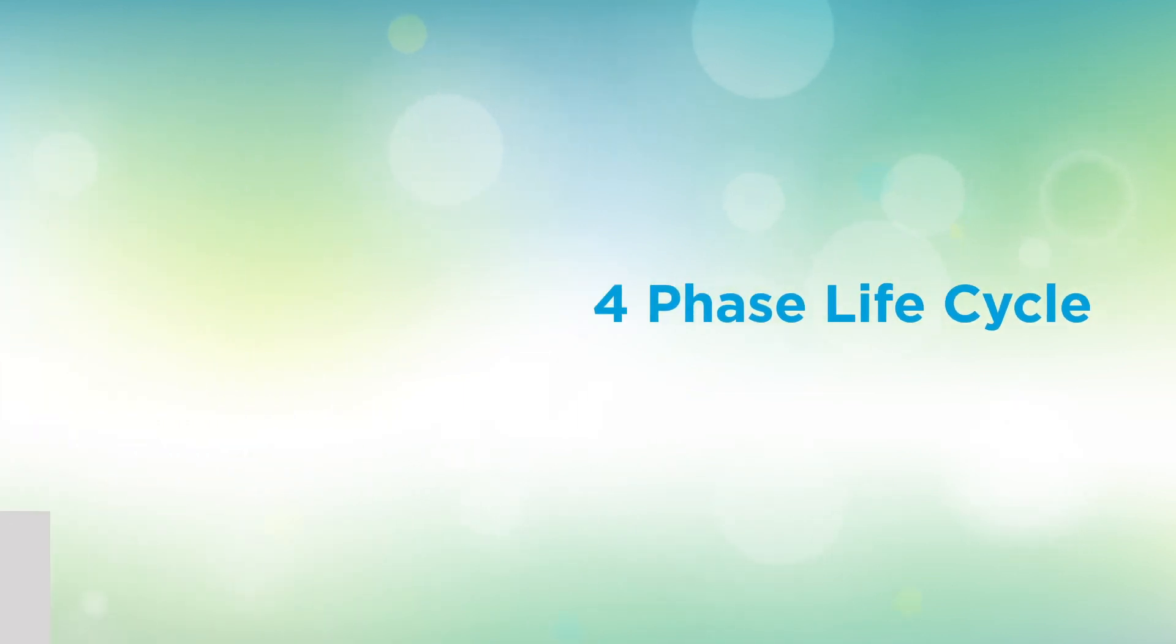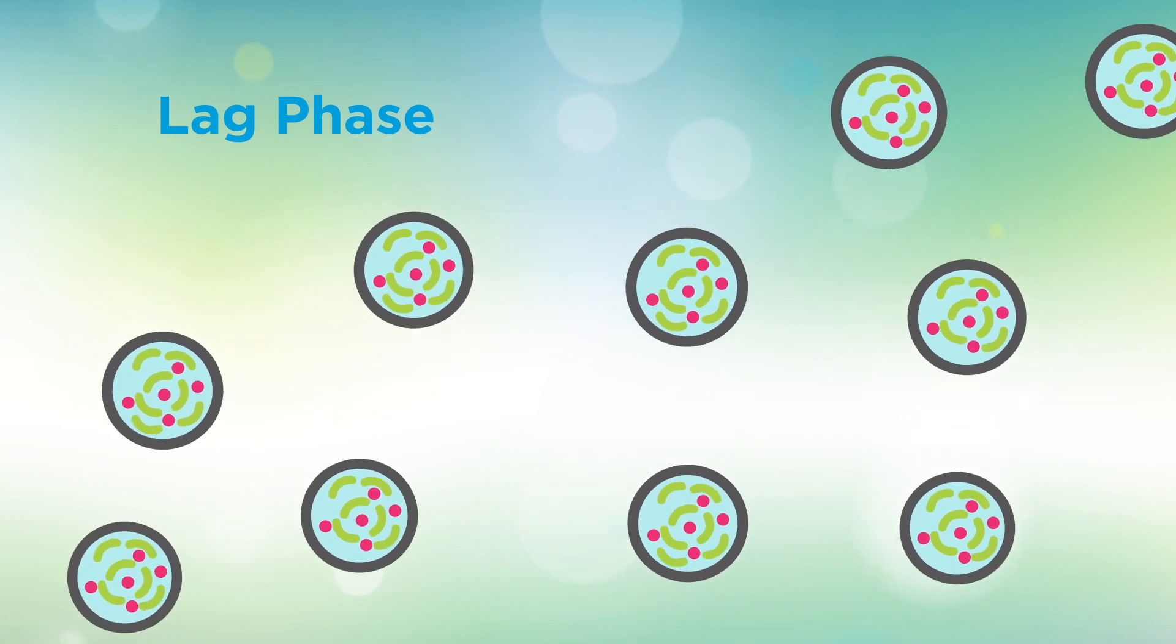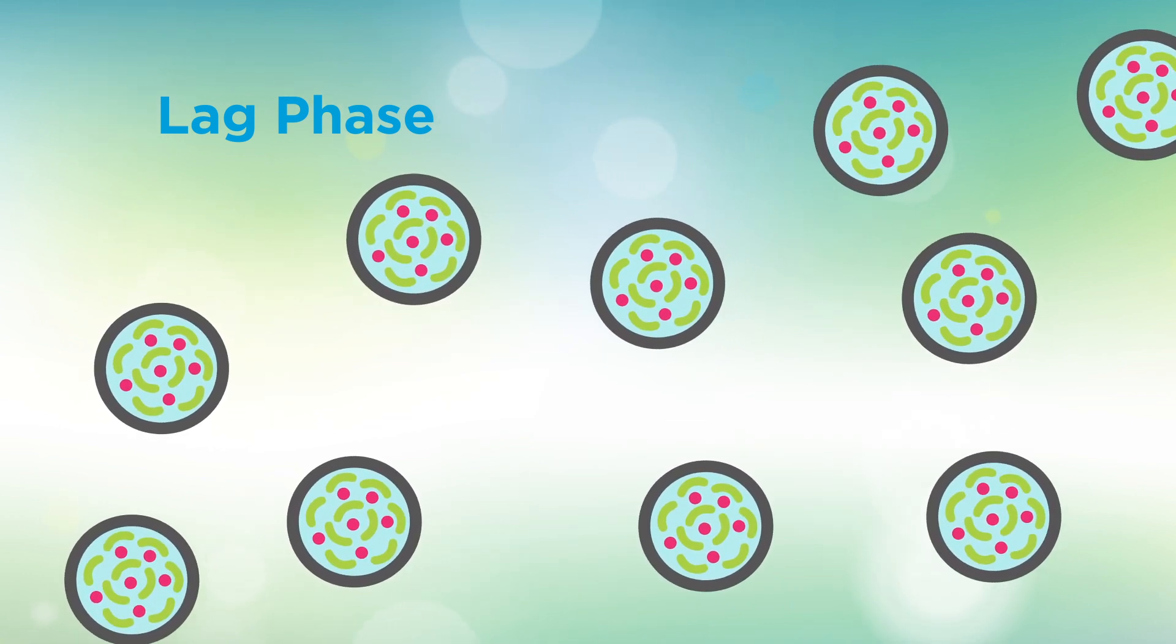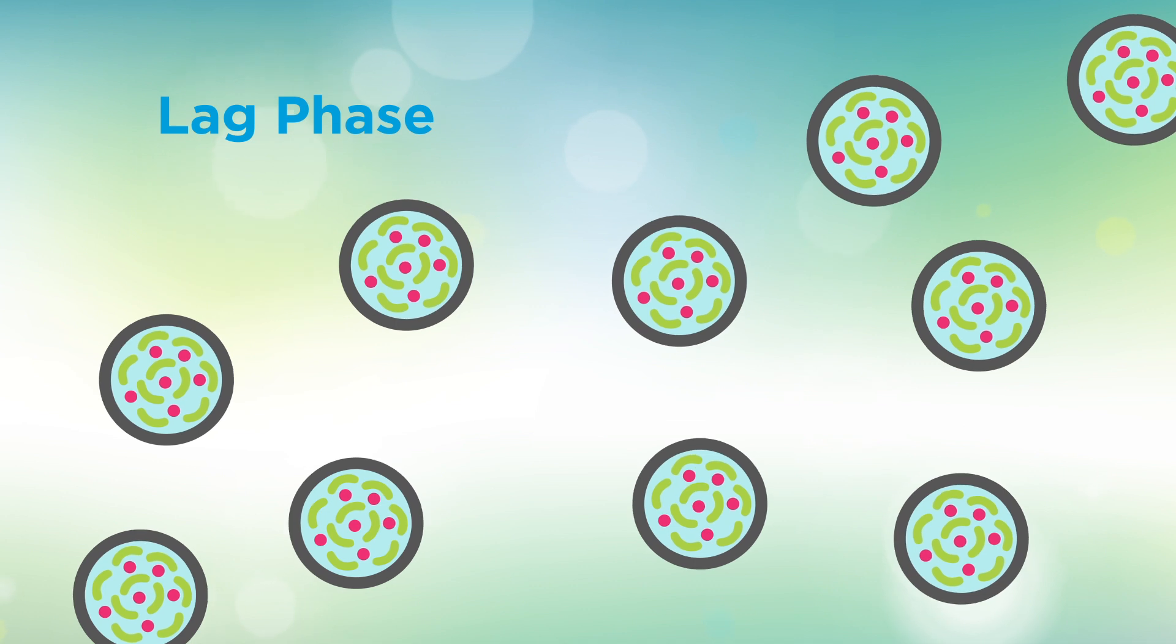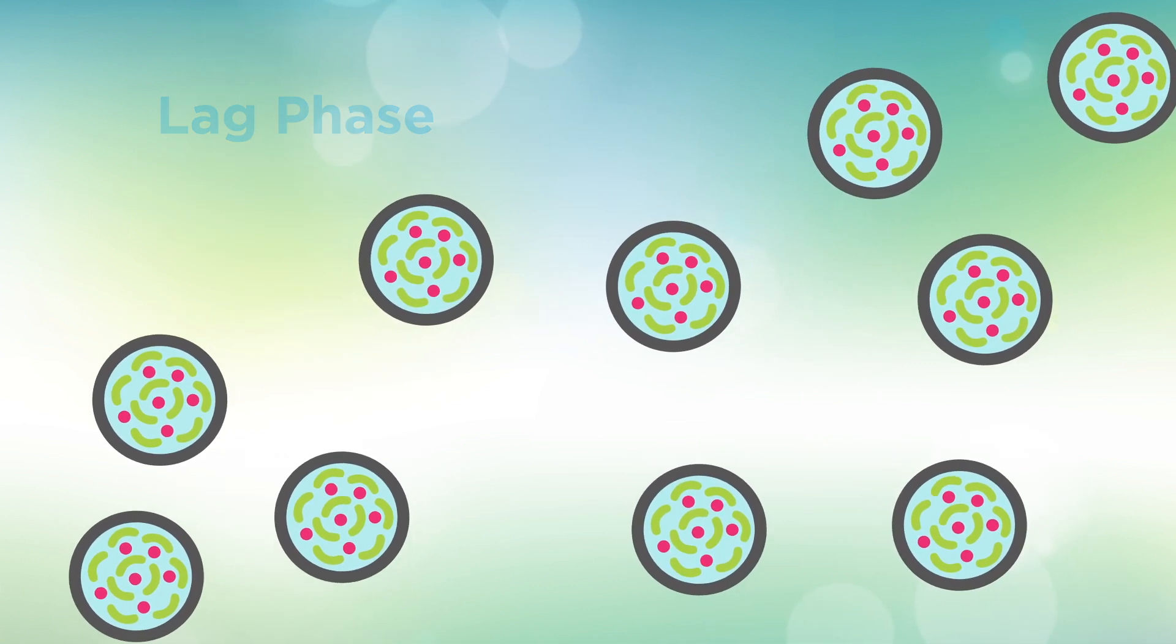Probiotic bacteria have a four-phase life cycle. Lag phase: In the first phase, bacteria mature and grow in size, but they are not yet able to divide. They adapt to their environment during this phase.